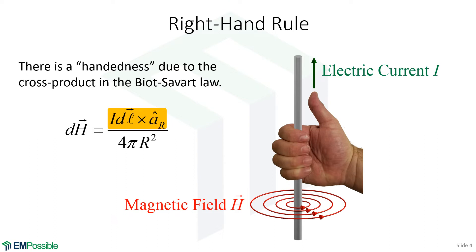This follows the right-hand rule, because we have a cross product and the cross product obeys the right-hand rule. We have I dL, the differential current element, which is in the direction of the current. In this case, we have a bar carrying current upward, so the differential current is upward. We have A_R, the unit vector from our differential current element out to where we're observing the field. The cross product leads to the right-hand rule, so we calculate a magnetic field that is circulating around the current element. If we curl the right-hand fingers in the direction the magnetic field is circulating, the thumb points in the direction of the current. You can use this either way — knowing the current to find the field circulation, or knowing the circulation to find the current direction.